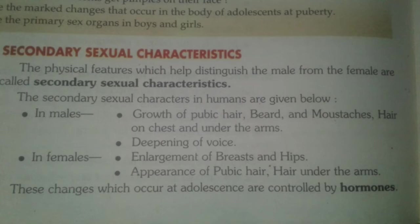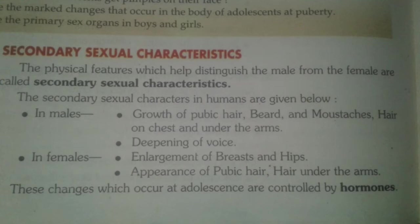First, let's have a look at what the secondary sexual characters are. The reproductive system in human beings develops and functions under the influence of hormones. We have already discussed about the endocrine system and the hormones. The sexual glands are the ovary and testes, which are also called the sexual glands.